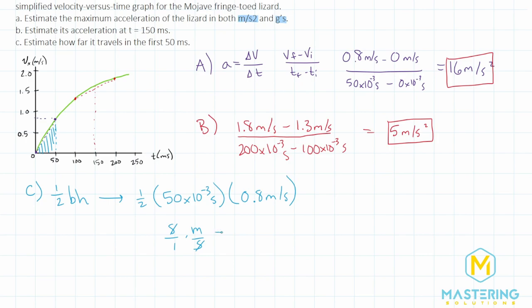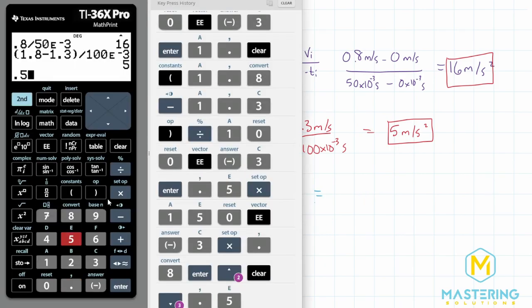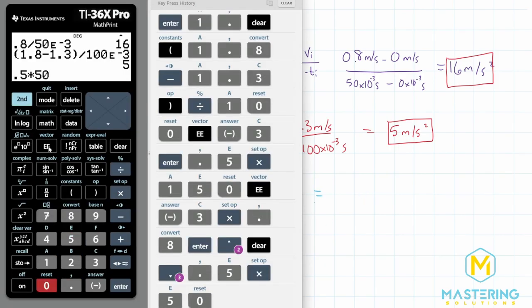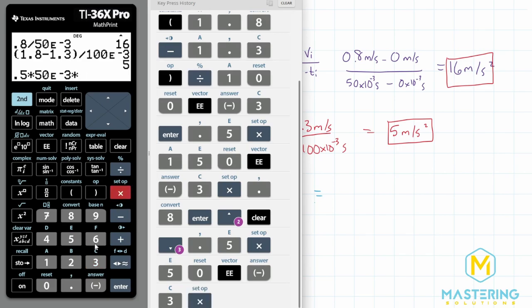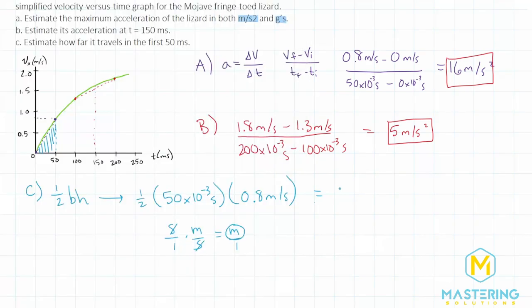The seconds will cancel, leaving us with meters over 1. So meters is what we need because we need a distance. We have 0.5 times 50 times 10 to the negative 3 times 0.8. So that gives us 0.02 meters. And that is the same as saying 2 centimeters.